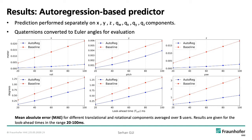These are our results, where we perform prediction separately on x, y, z, and different quaternion components. For evaluation, we converted the quaternions to Euler angles and plotted the mean absolute error for all components averaged over five users for different look-at times between 20 and 100 milliseconds. For all components, we see that the developed autoregression model has better performance than a baseline model where no prediction is performed. This confirms the approach works across all dimensions and brings clear advantages for both translational and rotational components.